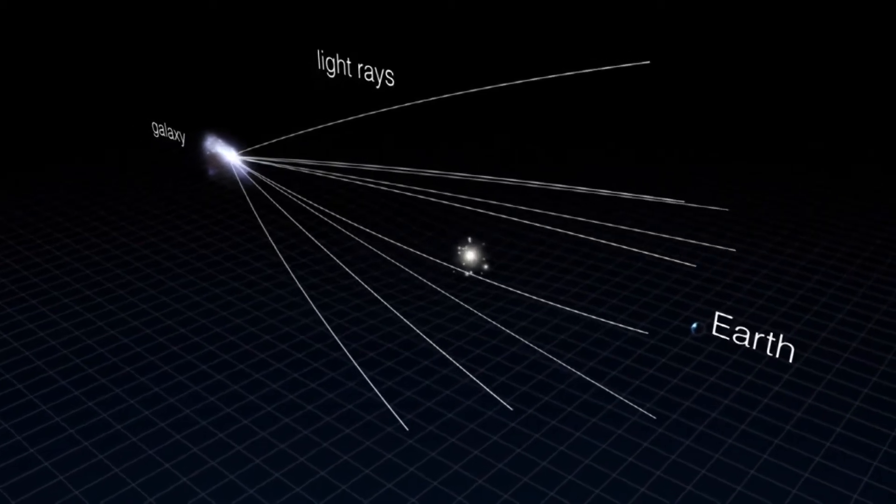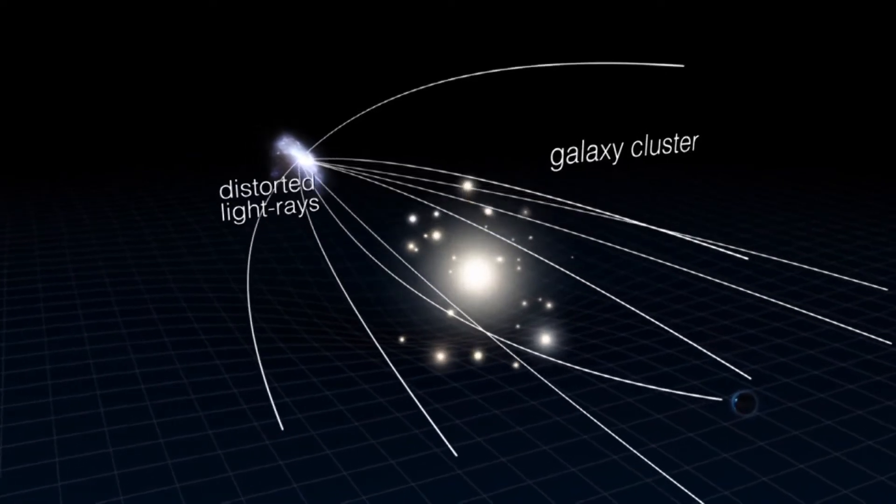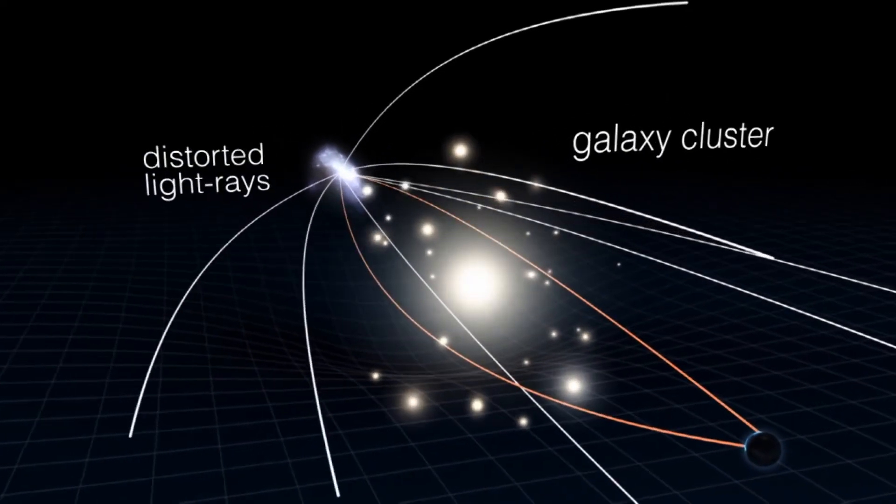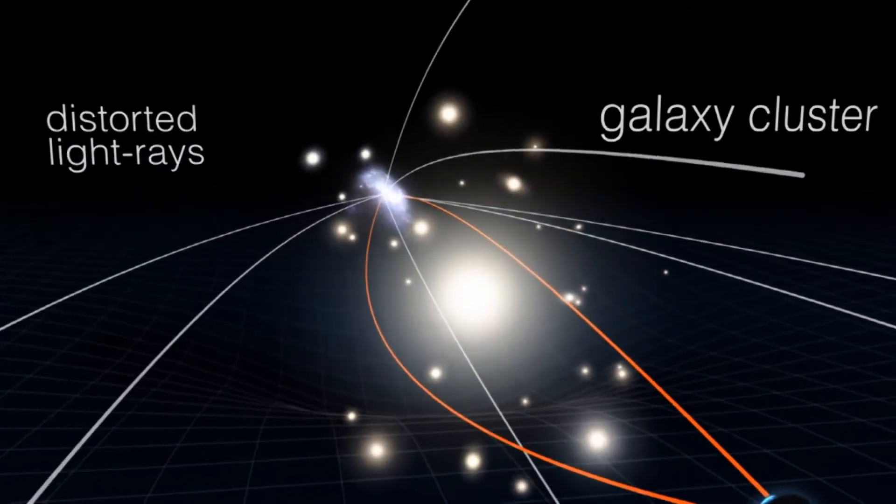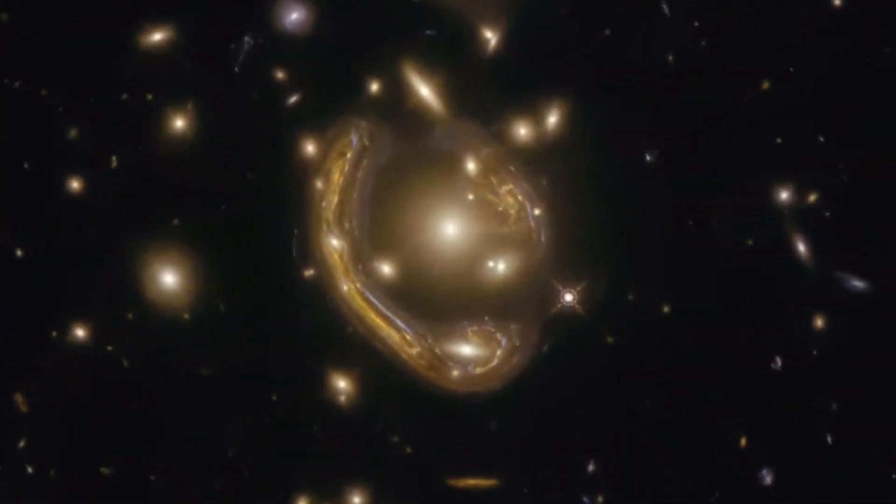A huge amount of matter, like a cluster of galaxies, creates a gravitational field that distorts and magnifies the light from distant galaxies that are behind it, but in the same line of sight. The effect is like looking through a giant magnifying glass.